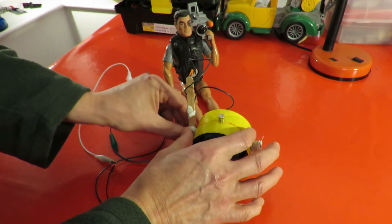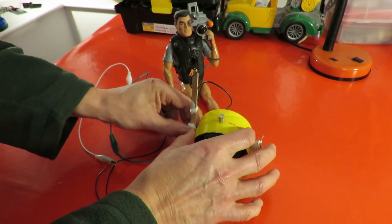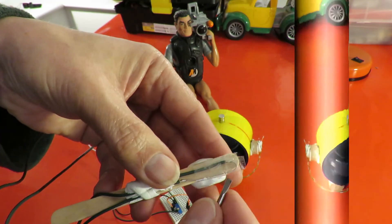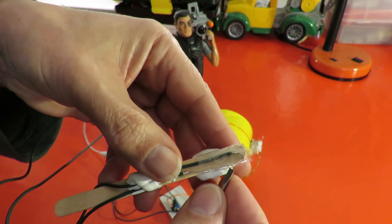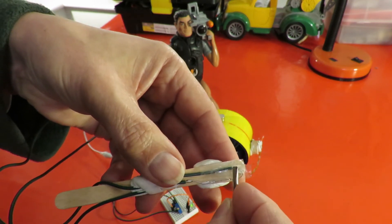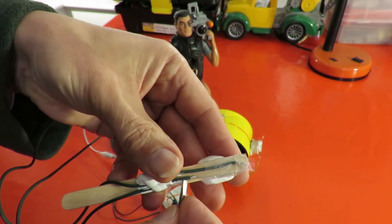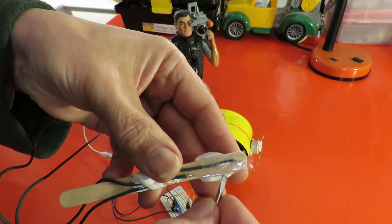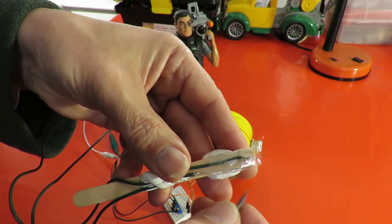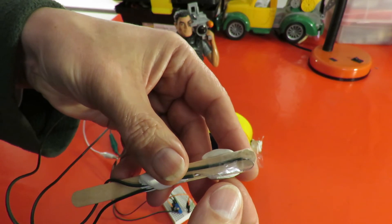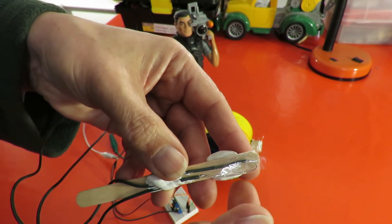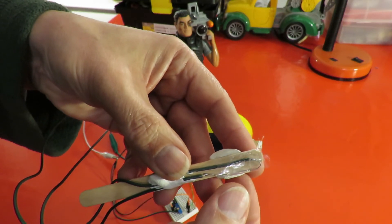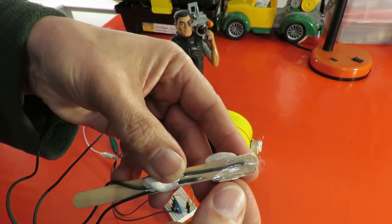And then if I take the reed switch off, there's a little glass tube there or glass capsule where we've got a wire going into it at both ends and then there's contacts in there that are normally just not touching. When you bring a magnet next to them, that makes them attract. So they make contact.